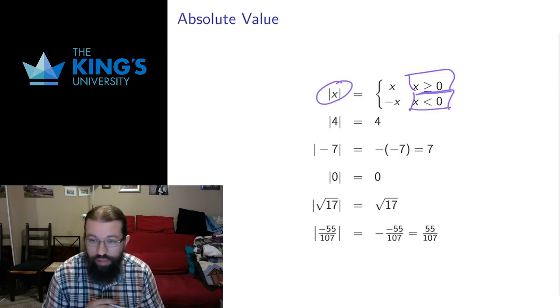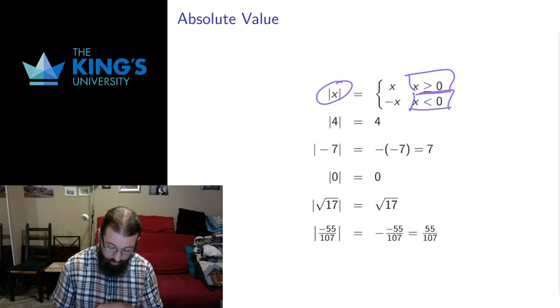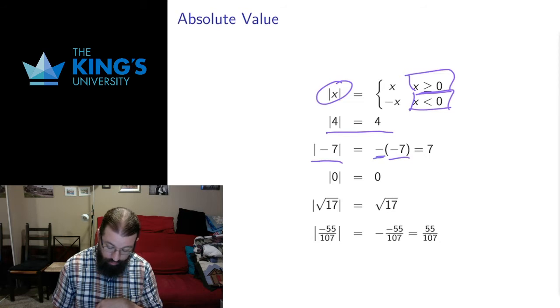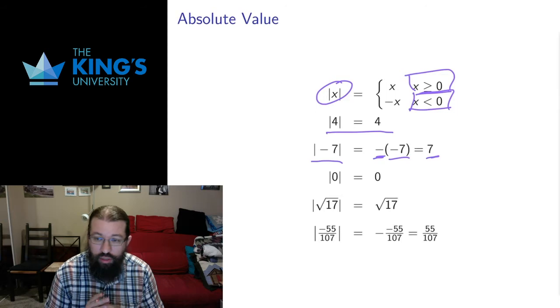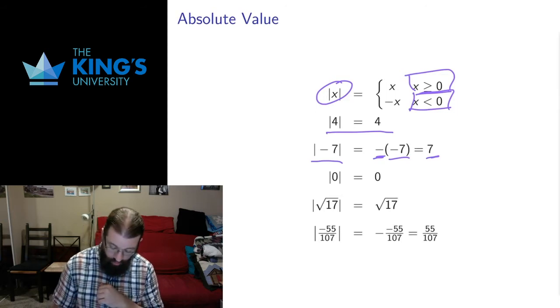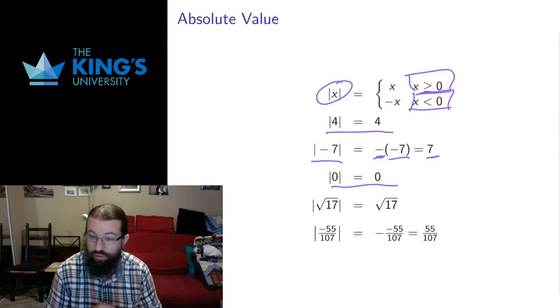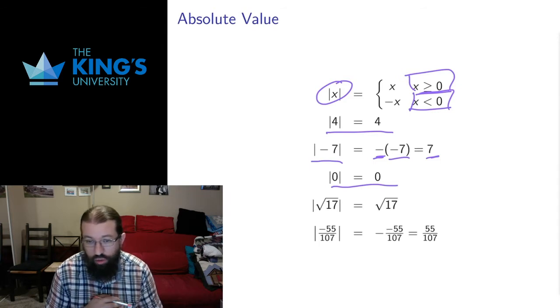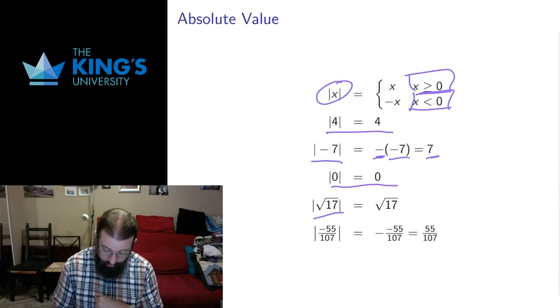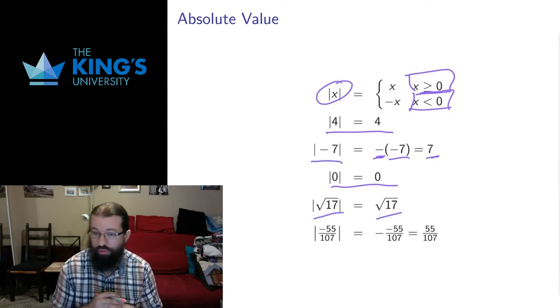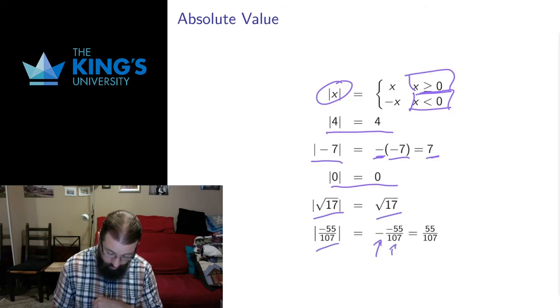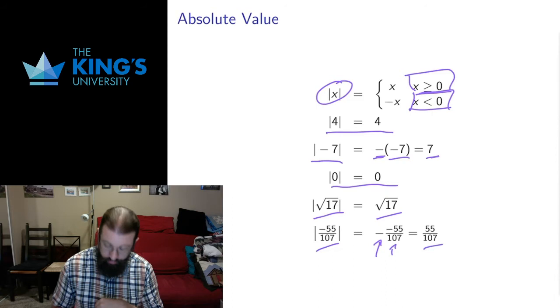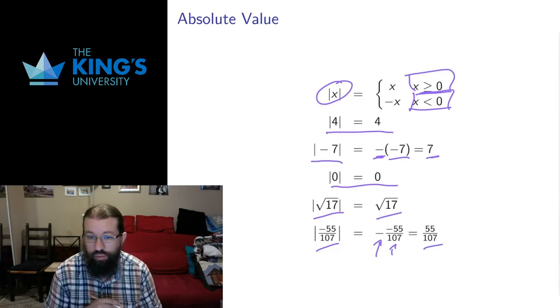Let's walk through a couple of examples to make sure this is clear. Any positive number like 4, absolute value of 4 is just itself. Any negative number, we take the negative number, multiply by a negative, that cancels off the negative, we get positive. So the absolute value of a negative number is the equivalent positive number. As a special case, the absolute value of 0 is 0. This can apply to whole numbers, but also to irrational numbers and fractions. The absolute value of square root 17 is positive, so it's just square root 17. And if I have some negative fraction, the same thing applies. I take the negative fraction, multiply by negative 1, and I get the positive fraction. That's what absolute value does.